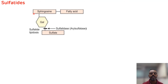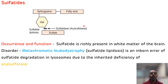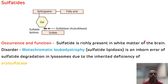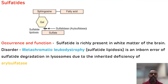Sulfatides are basically found in the white matter of the brain. The disorder associated with sulfatides is metachromatic leukodystrophy, which occurs due to the deficiency of sulfatidase or arylsulfatase A — the enzyme required for the degradation of sulfatides.